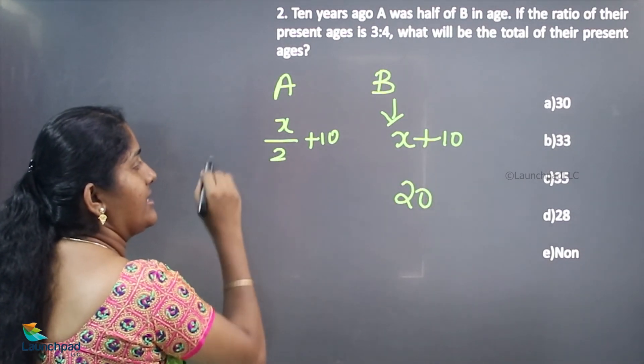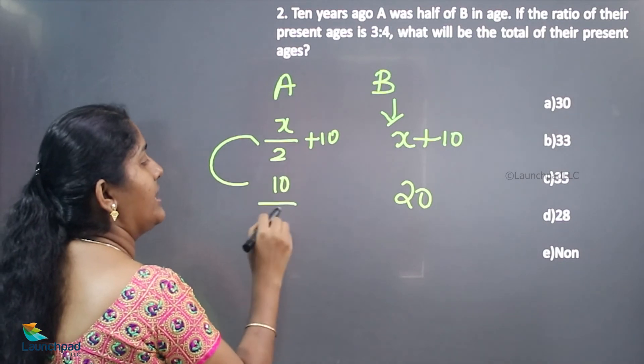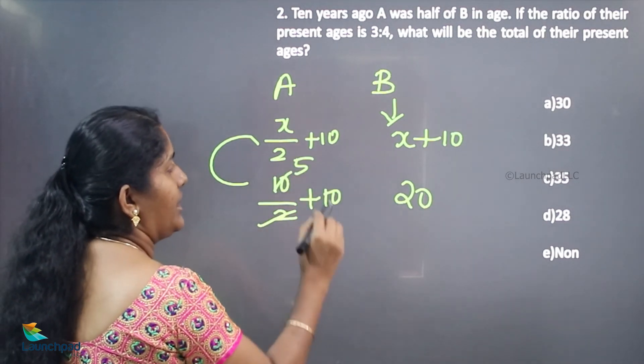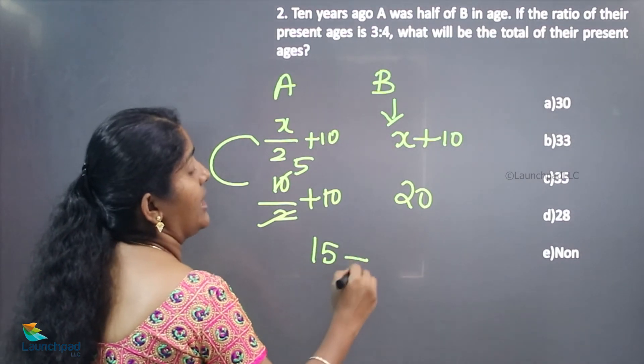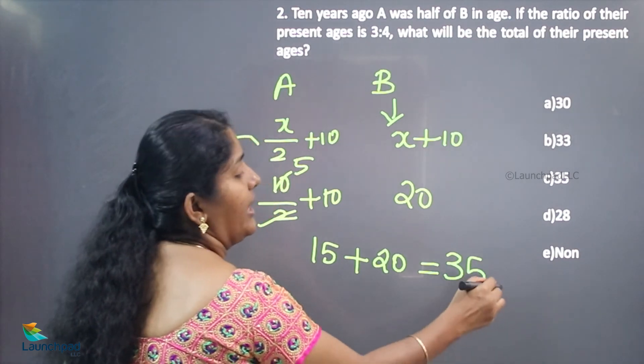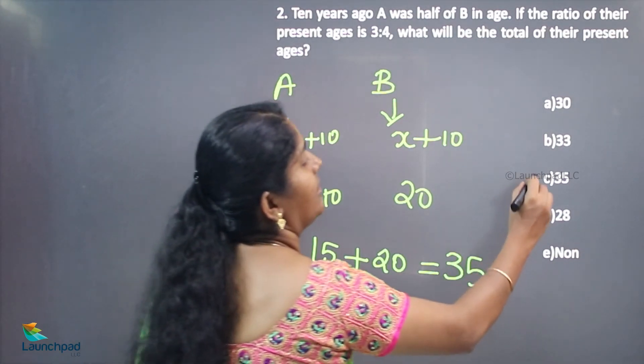What is A's age? 10 by 2 plus 10, so 5 plus 10 equals 15. A's age is 15 and B's age is 20. 20 plus 15 equals 35. Hence, the answer is 35.